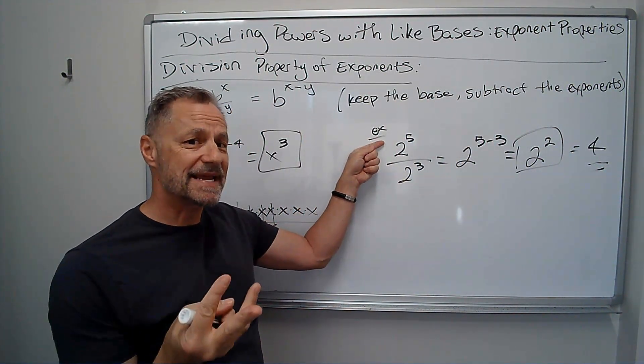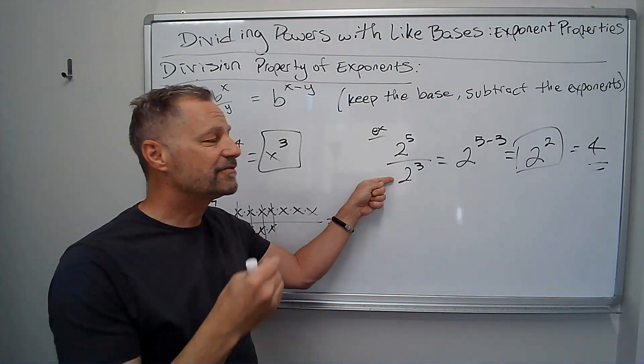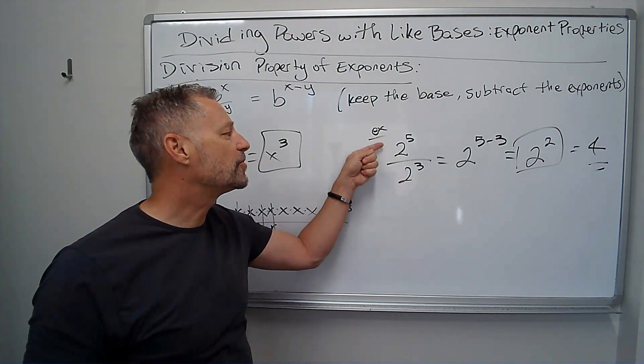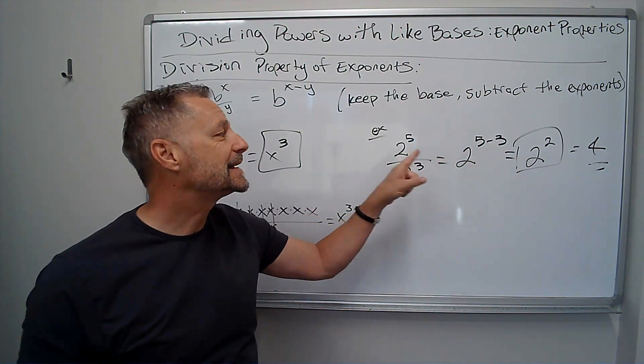Notice 2 to the 5th: 2, 4, 8, 16, 32, divided by 2, 4, 8. Well, 32 divided by 8 is 4. Keep the base.